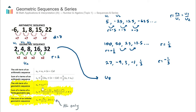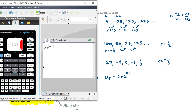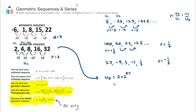The formula is: Un equals U1 multiplied by the common ratio to the power of n minus 1. So here, U1 is 2, the common ratio is 2, and n is 8. That gives us 2 multiplied by 2 to the power of 8 minus 1, which equals 2 multiplied by 2 to the power of 7. Using a calculator, that gives 256. So the eighth term in the sequence is 256.